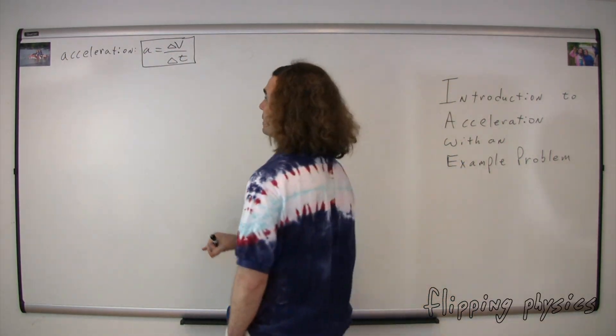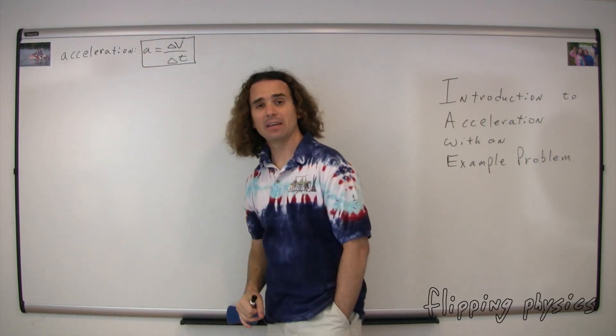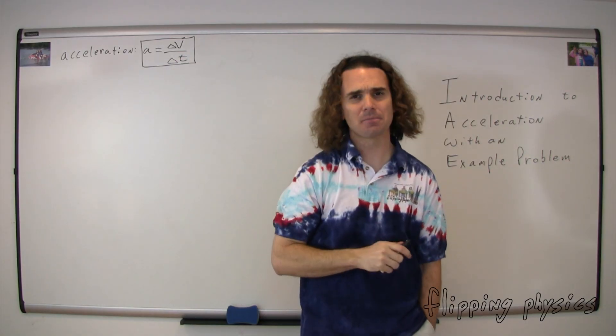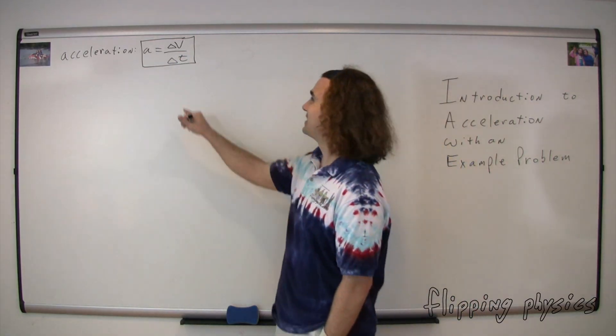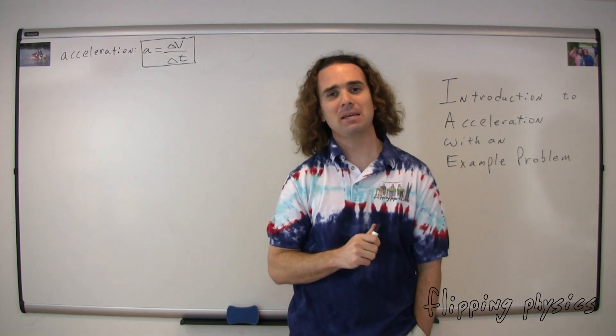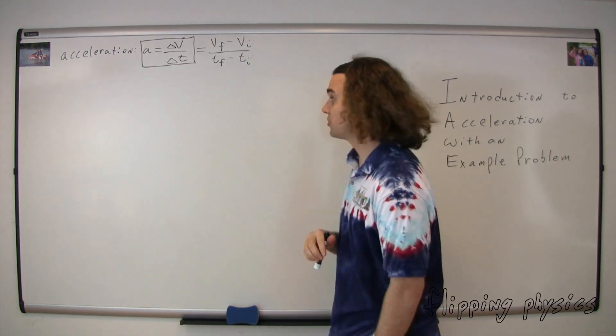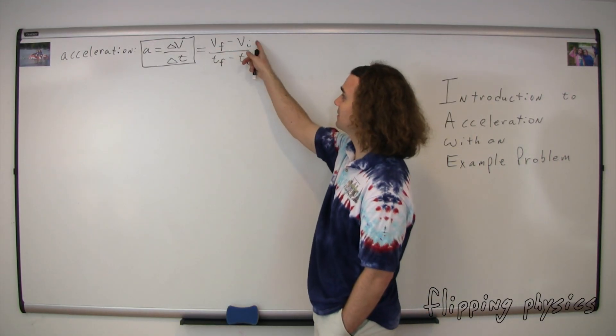The symbol for acceleration is a lowercase a and acceleration equals delta v over delta t or the change in velocity over change in time. Remind me, Bo, what does delta v or the change in velocity mean? Delta means final minus initial. That's what it always means. We saw that with the change in position and with change in time. Yes, that's true and delta will continue to come up quite often. So delta v means the change in velocity or the final velocity minus the initial velocity.